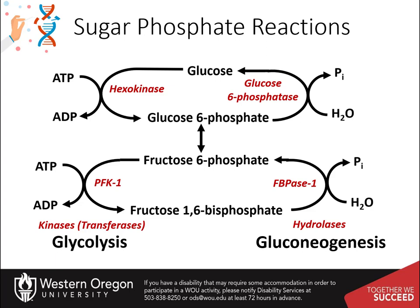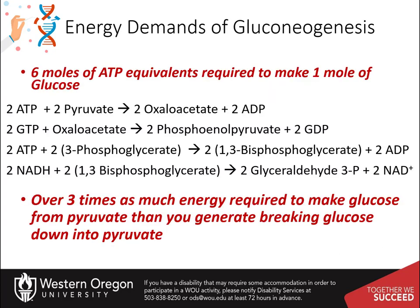Thus, there is no substrate-level phosphorylation that occurs in the gluconeogenic pathway. Overall, there are approximately six molar equivalents of ATP required to make one mole of glucose. Over three times as much energy is consumed during glucose formation than is generated from glycolysis during the breakdown of glucose.